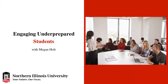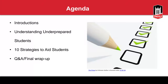Thank you for joining me today. We're going to talk about how to engage underprepared students. We'll start with introductions, then share strategies for identifying students who may be struggling or underprepared. After that, we'll look at how to understand our underprepared students, how to relate to them, and how to build a core structure that will enable them to succeed. From there, we'll come up with 10 specific strategies you can employ in your classroom, followed by Q&A and a final wrap-up at the end.